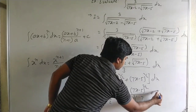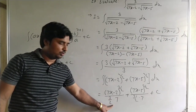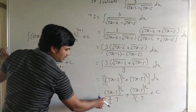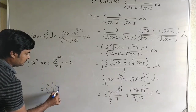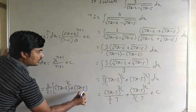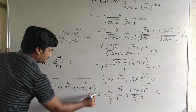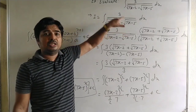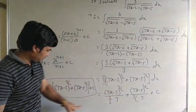Here 3 by 2 into 7 equals 21 by 2, so it becomes 2 by 21. The last answer is 2 by 21 into 7x minus 2 to the power 3 by 2 plus 7x minus 5 to the power 3 by 2, plus c. If the problem is in this form we take the rationalization, simplify, and use the x to the power n formula to get the answer.